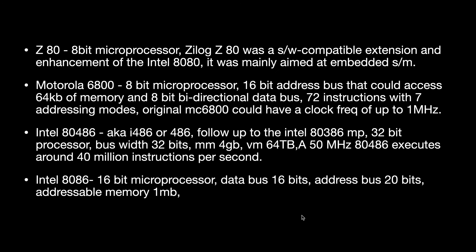The Zilog Z80 is an 8-bit microprocessor. It was introduced by Zilog in 1976 as the startup company's first product. The Z80 was a software-compatible extension and enhancement of the Intel 8080, and it was mainly aimed at embedded systems.